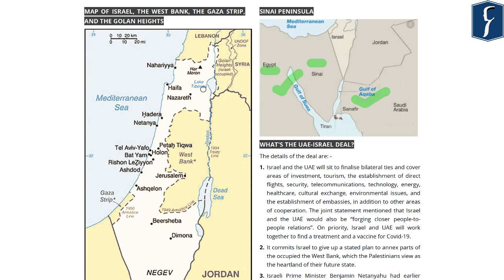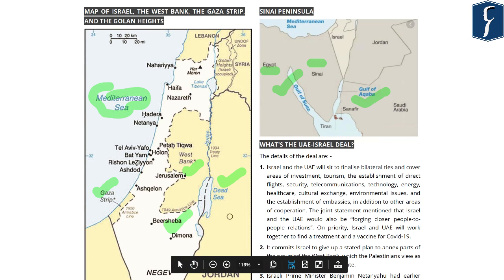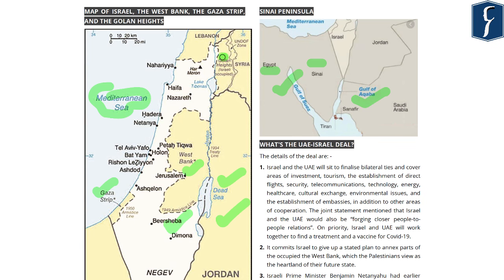The West Bank and the Gaza Strip regions are claimed by Palestine, and they want to create a state out of these territories. However, Israel has been forcibly colonizing the West Bank and the Gaza Strip. The Gaza Strip opens up into the Mediterranean Sea. The West Bank shares its border with the Dead Sea, which is shared between Israel and Jordan. The Golan Heights shares its border with Syria, Jordan on the southern part, Israel on the western part, and Lebanon on the northern part.